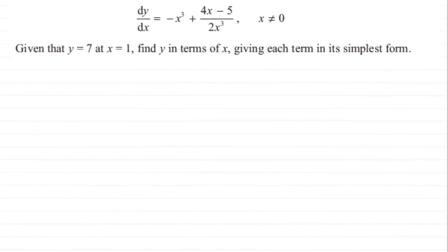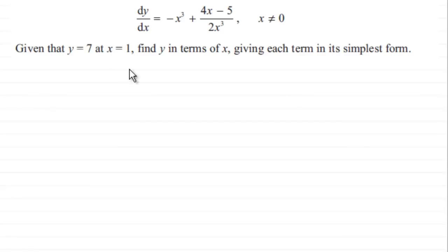In this question, we've got to solve this differential equation: dy/dx equals minus x cubed plus 4x minus 5, all over 2x cubed, where x doesn't equal 0. We're given the initial conditions that y equals 7 and x equals 1, and asked to find y in terms of x, giving each term in its simplest form.